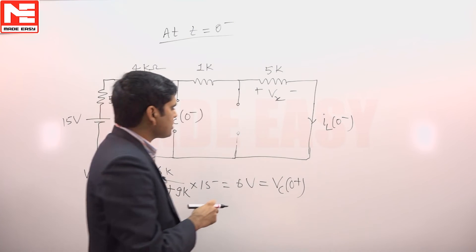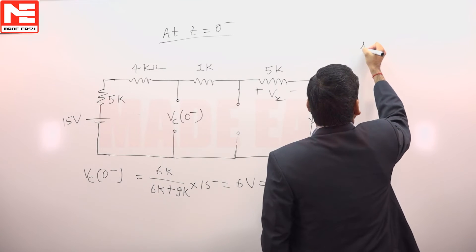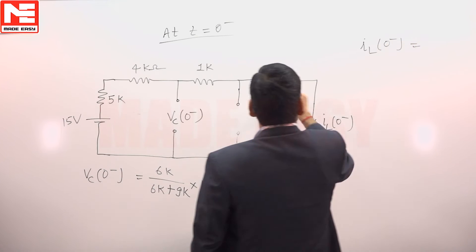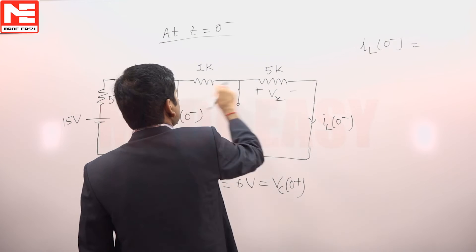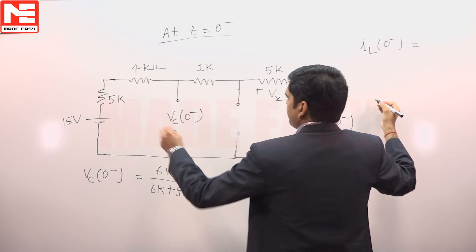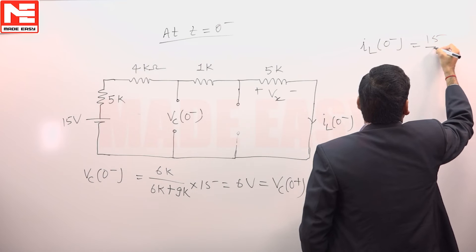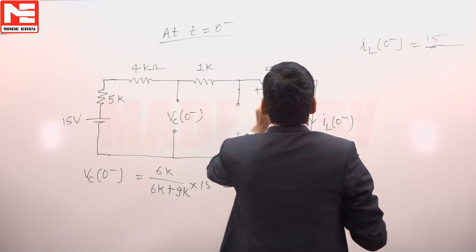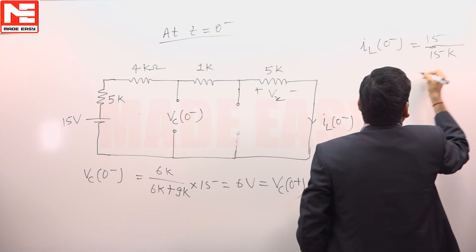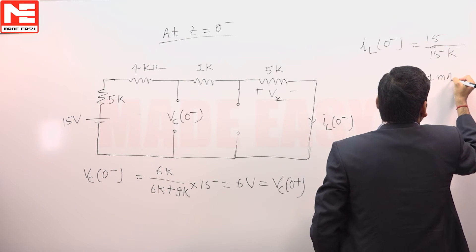IL 0 minus can be calculated as IL 0 minus. This is the current flowing across this branch and the voltage across this current is same, which can be calculated as 15 divided by 5 plus 4, 9, 10 plus 15 k. It is equal to 1 milli ampere.